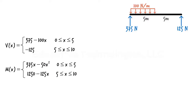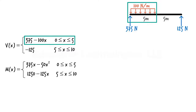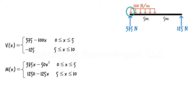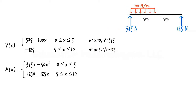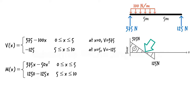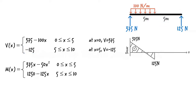Our task is to graph the equations. For shear, we have two equations. For the left segment of the beam, where x is between 0 and 5, shear equals 375 minus 100x. This represents a line segment. To draw it, we need two points — the segment's endpoints. At x equals 0, shear value is 375. At x equals 5, we get negative 125. Now locate the points on the coordinate system, then connect them with a straight line. Note that the line crosses the x-axis somewhere between 0 and 5, making the left part of the diagram positive and the right part negative. For x between 5 and 10, shear is given by the equation negative 125. Since shear is not a function of x, it remains constant throughout the segment. Here is the complete shear diagram for the beam.